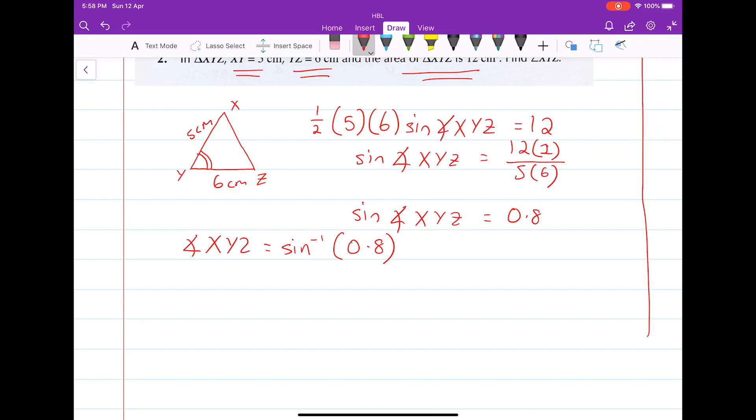When you do an inverse sine of 0.8, you'll get a value of 53.130 degrees, and then you round it off to 1 decimal place since this is an angle, 53.1 degrees.